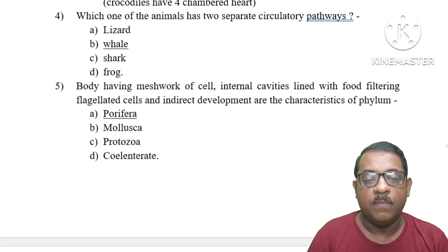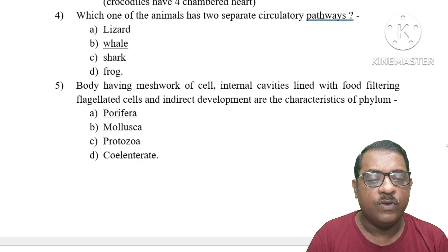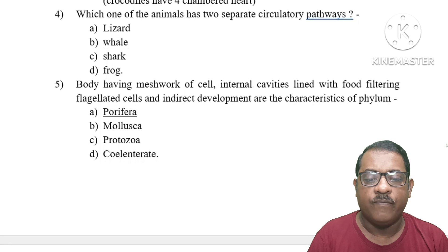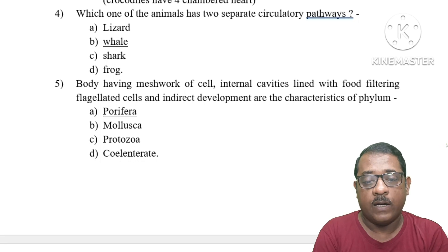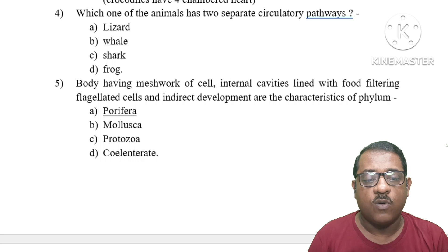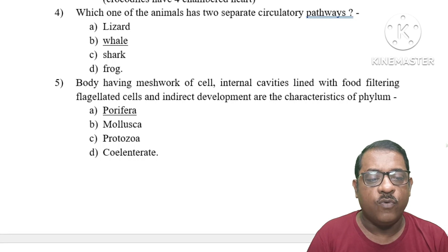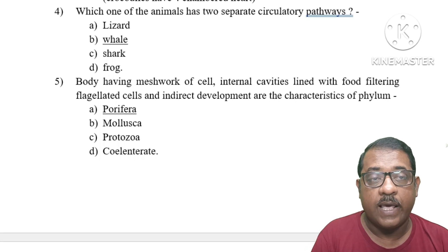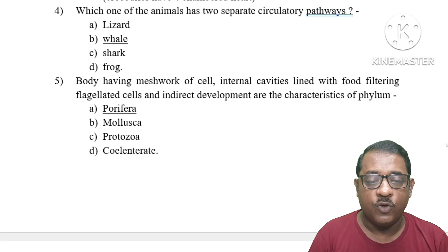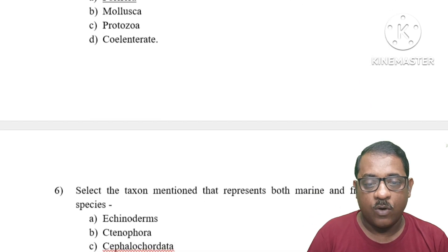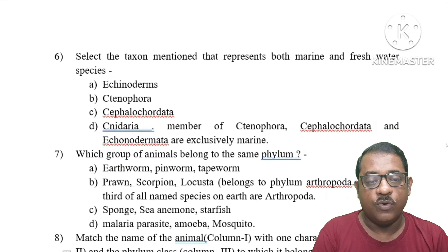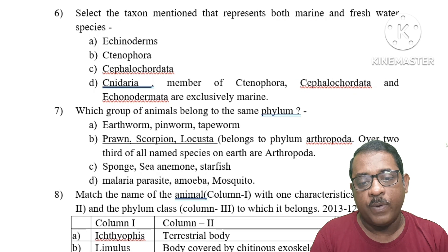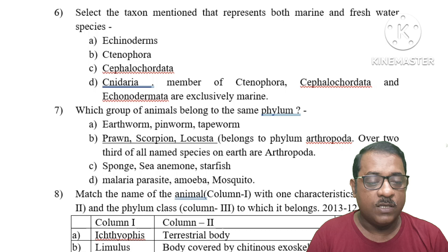Question 5: Body having a mass of cells, internal cavities lined with food-filtering flagellated cells, and indirect development — these are characteristics of which phylum? These three characters — mass of cells, flagellated cells, and indirect development — are characteristic of Porifera. The right answer is Option A, Porifera.